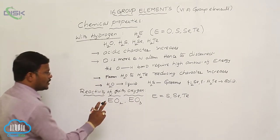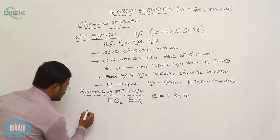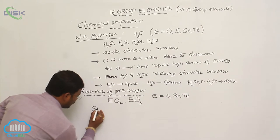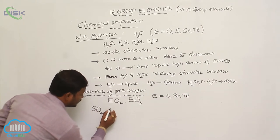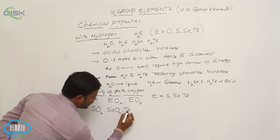These two types of oxides are resulting from 16th group elements by reacting with oxygen. So let us have the sulfur dioxide and selenium dioxide and tellurium dioxide.